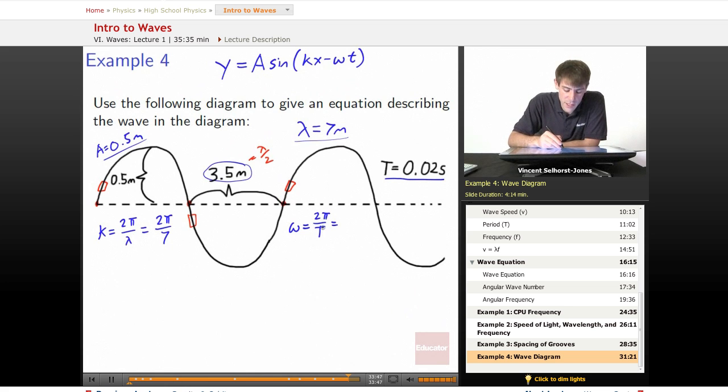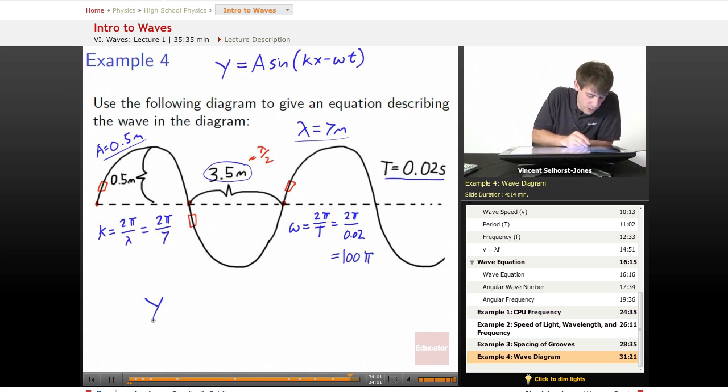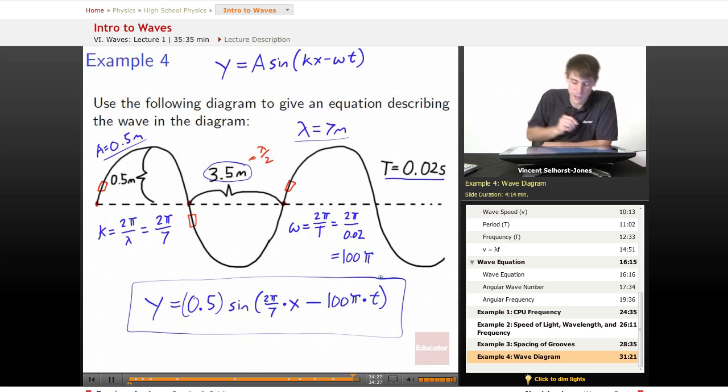Back to the problem. Omega is equal to 2π divided by the period. If we know what the period is, 2π divided by 0.02 seconds, that will give us 100π. We just plug in all of our numbers. So y is equal to 0.5 meters times sine of 2π over 7 times x minus 100π times the time. And that right there is our answer.